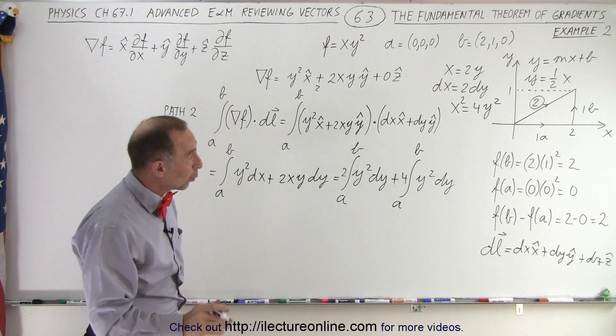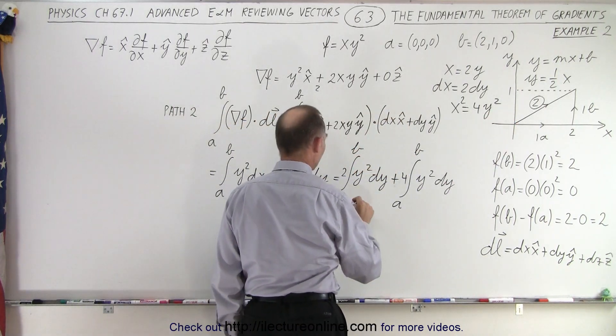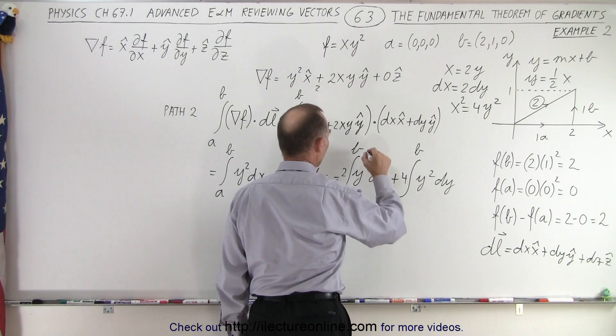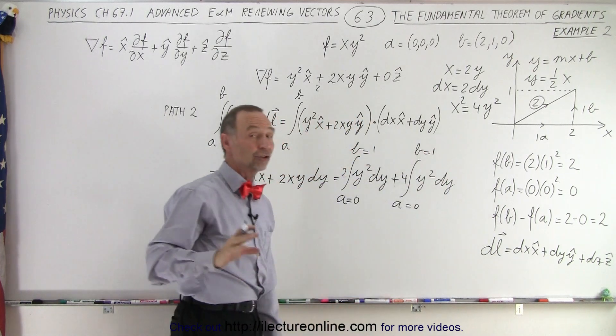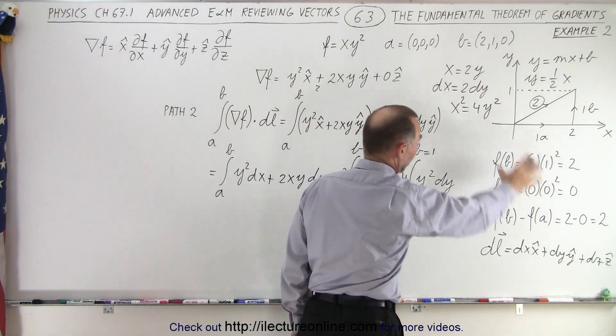Those two integrals again from a to b, but now since I'm integrating over y only and y changes from 0 to 1, so I can just say that a equals 0, b equals 1, and that should be equal to 2 if the fundamental theorem of gradient holds.